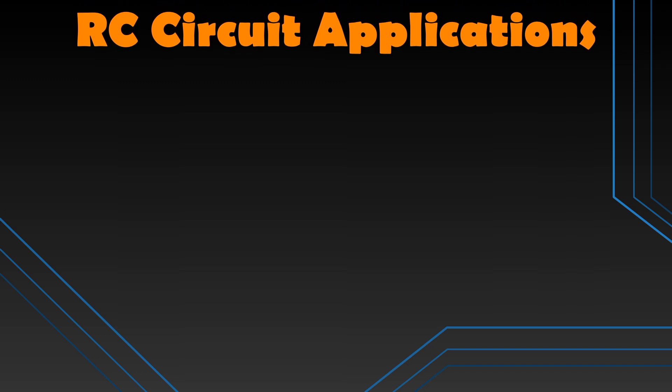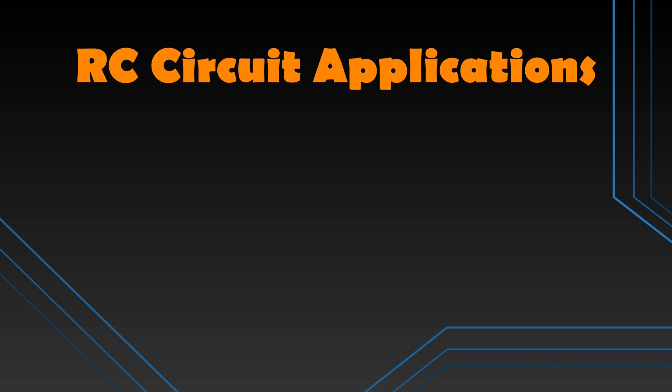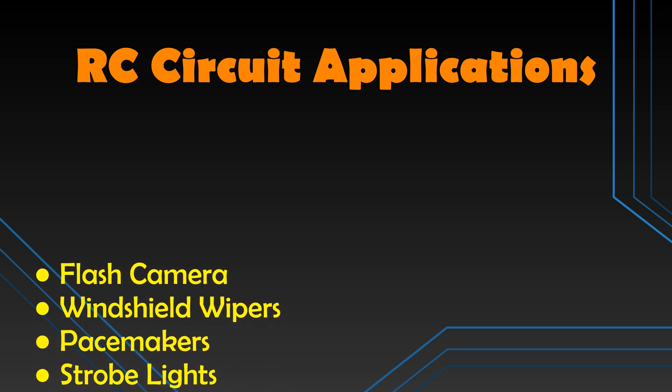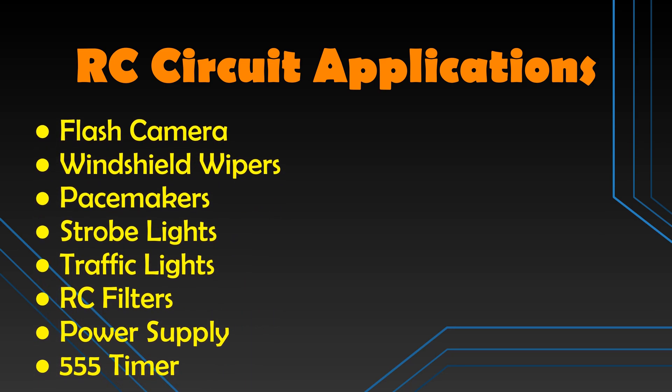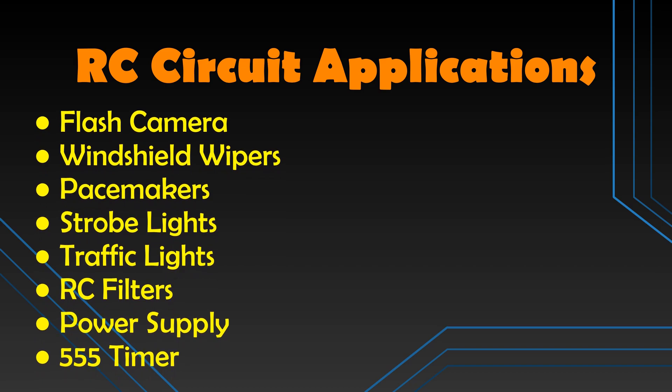The RC circuit has thousands of uses and applications. It is used in a flash camera — the charged capacitor powers the flash and the light flash discharges the capacitor. RC circuits can be used as timers in windshield wipers, pacemakers, strobe lights, and traffic lights. The windshield wiper uses a variable resistor to adjust intervals between sweeps; increasing the resistance increases the RC time constant, which increases the time between wiper operations. Pacemakers have sensors that detect body motion and breathing to increase heart rate during physical activities, so RC timing circuits control the time between voltage signals to the heart. Strobe lights produce bright flashes in short bursts, which is also an application of RC timing circuits.